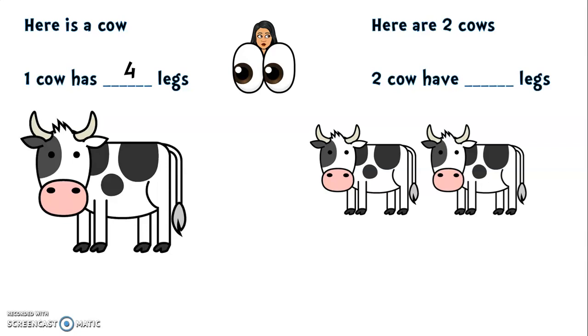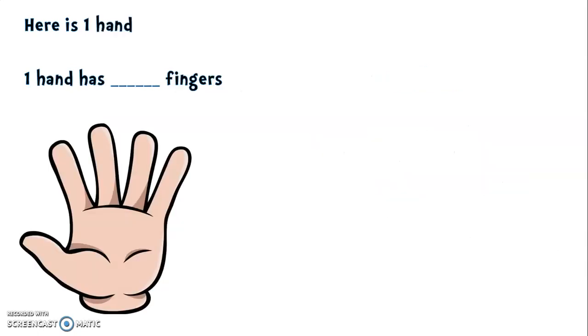Here are two cows, and two cows have how many legs? We need a sum to help us find the answer. Our sum would be 4 + 4. And we would count all the legs all together to get the answer eight. Well done!